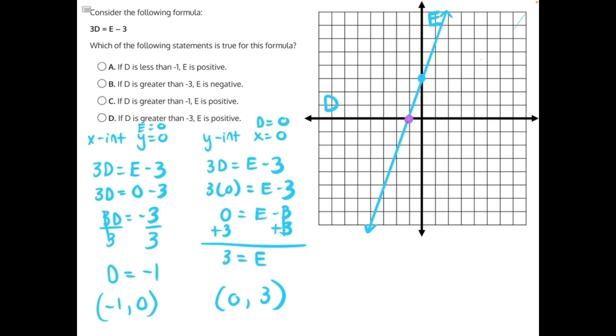If we focus on our x-intercept here, we can see that all of the values to the right of this x-intercept, or that are greater than our x-intercept, have positive y-values or positive E-values. So when D is greater than negative 1, our E-values are all going to be positive. And then the opposite is true. All of the values to the left of D equals negative 1 have negative y-values or E-values. So when D is less than negative 1, E is always negative. And that will help us find our correct answer.